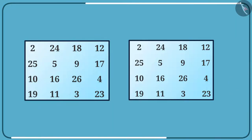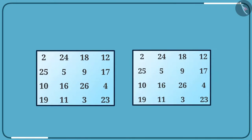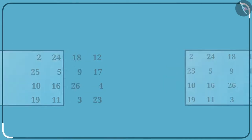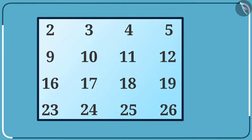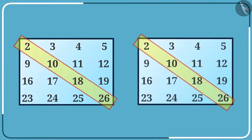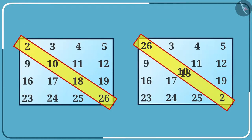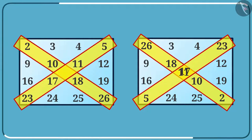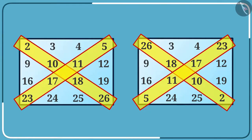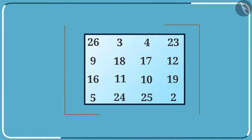Now let me share an easy trick to make a magic square. Look at this magic square. I will interchange the equally placed numbers along each diagonal. This way, I will get another magic square.